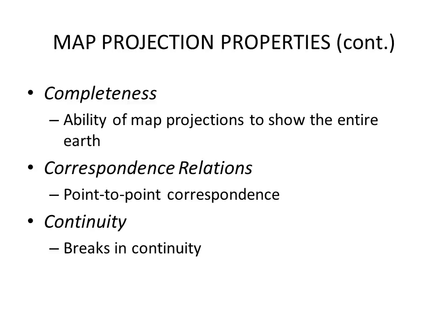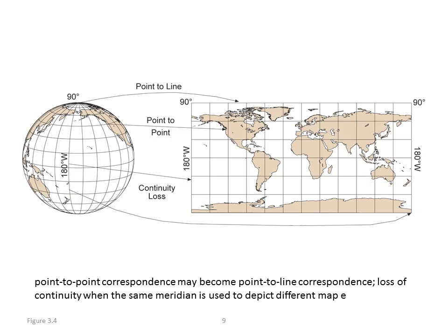One of the important map projection properties is the concept of completeness. And this is the ability of a map projection to show the entire Earth. We'll see a representation of that in a moment. Correspondence relations are also important, which is where we talk about point-to-point correspondence. In other words, a point on the map results in a point on the line.